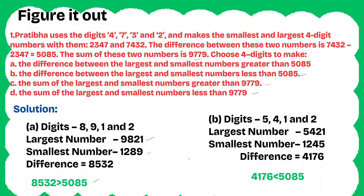Subsection B: digits 5, 4, 1, and 2. The largest number is 5,421, and the smallest number is 1,245. The difference is 4,176. This difference is less than 5,085, therefore 4,176 satisfies that condition.